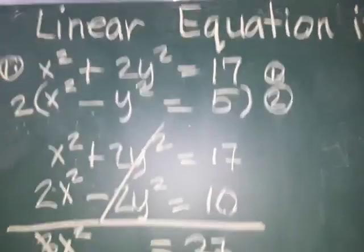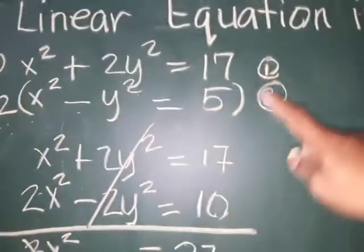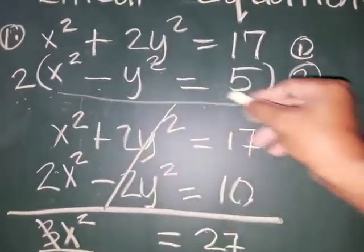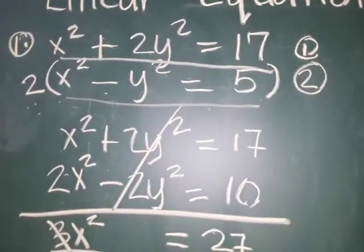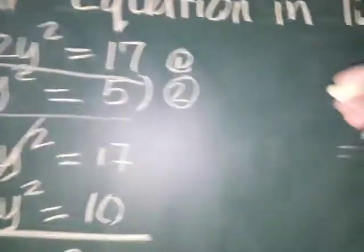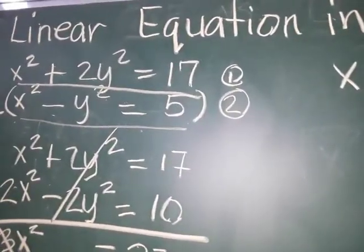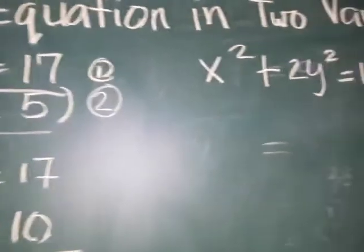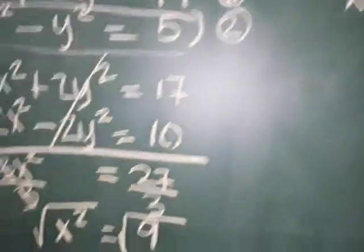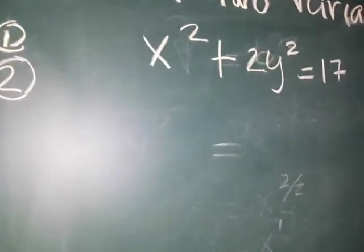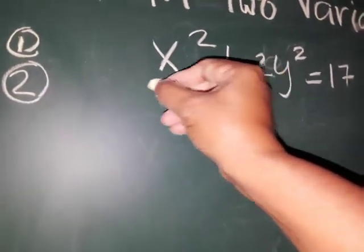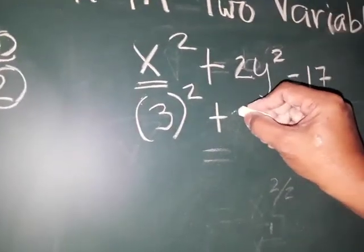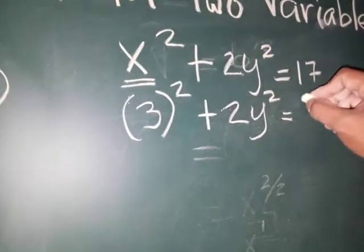Once we have the value of x or y, we can pick either of the two original equations. Let's use equation 1: x squared plus 2y squared is equal to 17. Our x is 3, so substitute 3 in for x. Substituting means we replace x with 3. So it becomes 3 squared plus 2y squared is equal to 17.